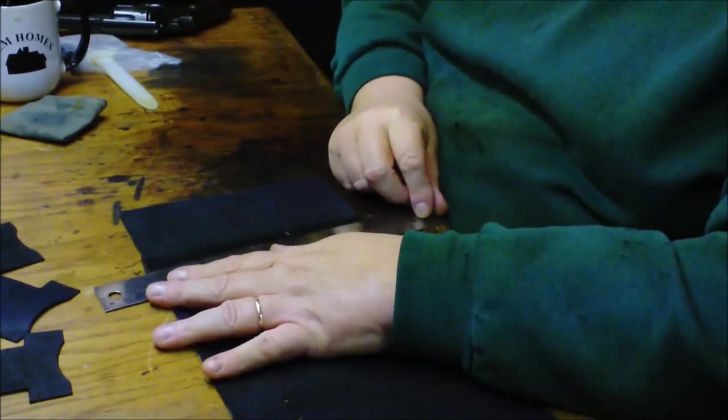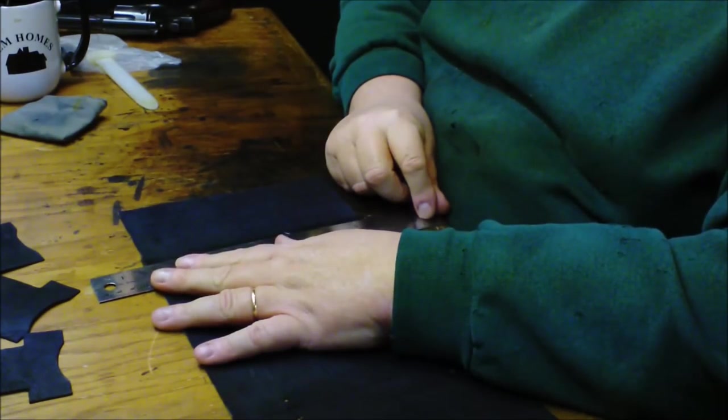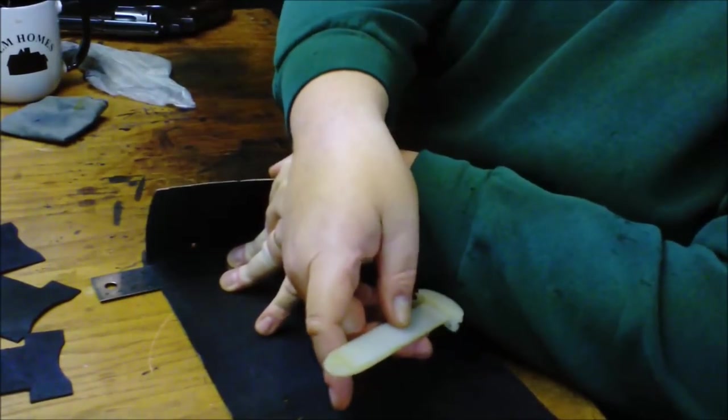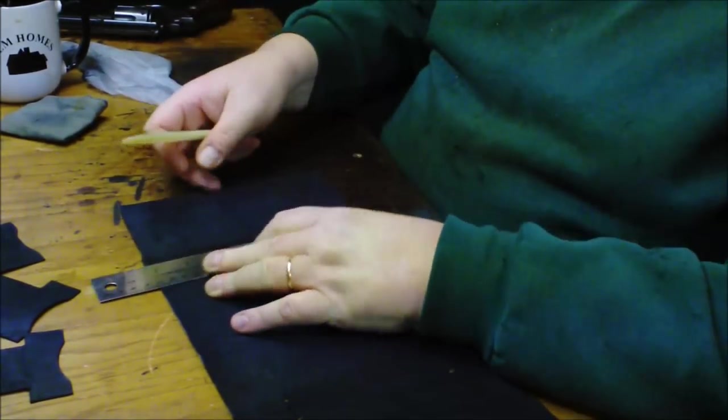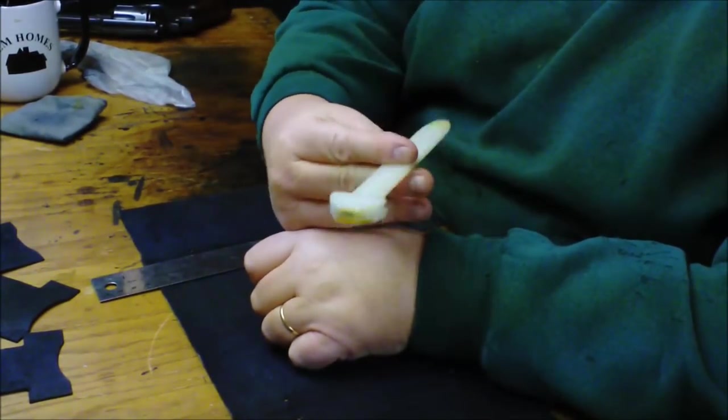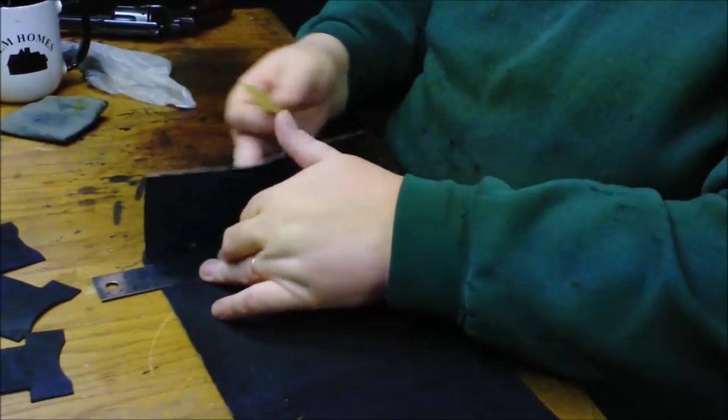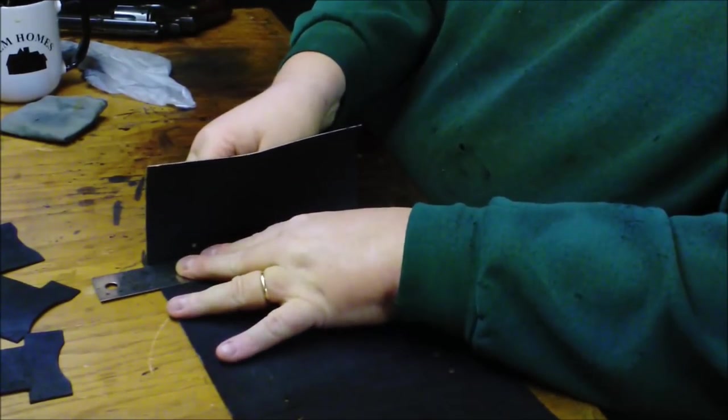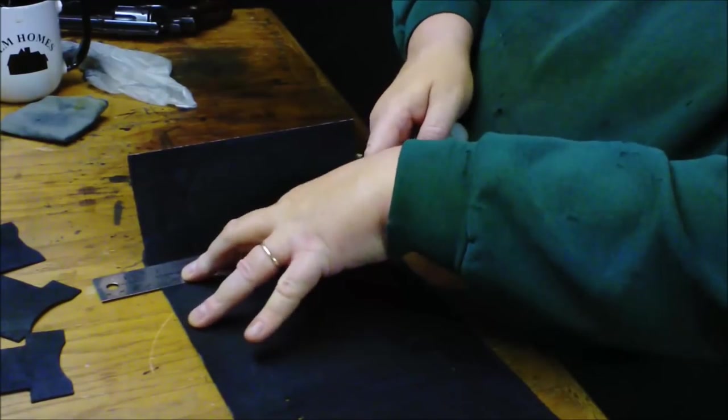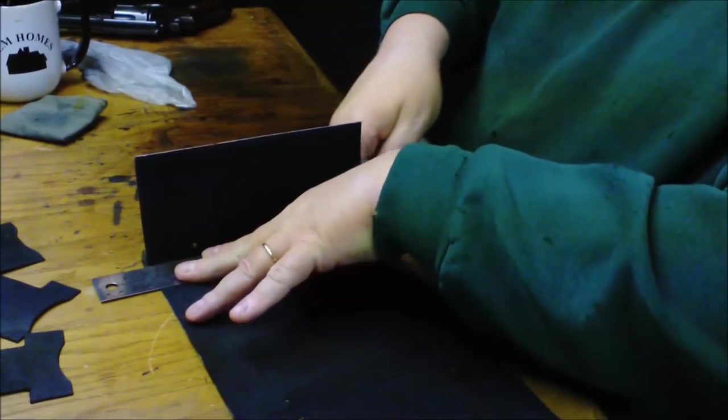I'm going to take my ruler and put it right on the fold line. And then I'm going to lift this up and take my bone folder, which has a burnisher on one end and a bone folder on the other end. It's inexpensive from Tandy Leather. I'm just going to gently fold this up, using the ruler to keep my crease good and straight.